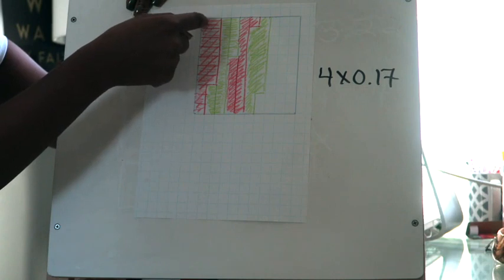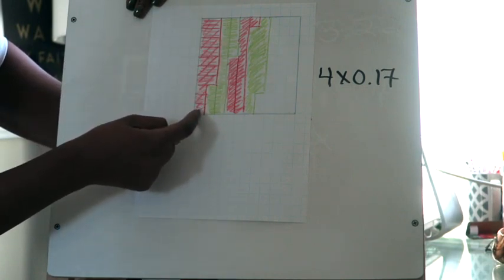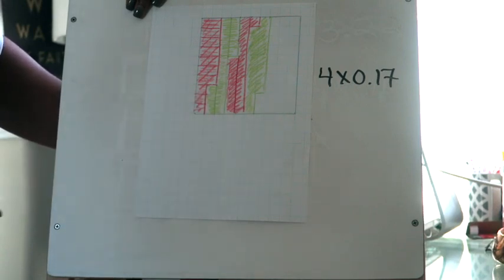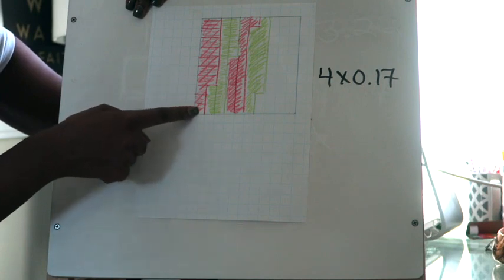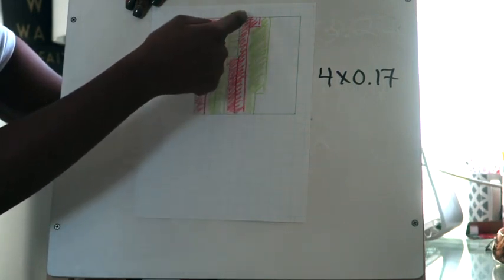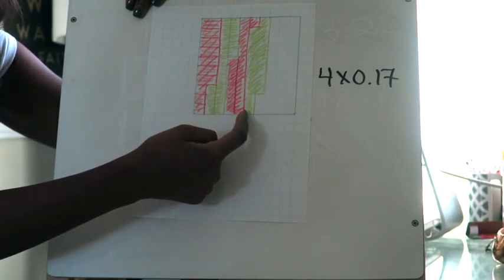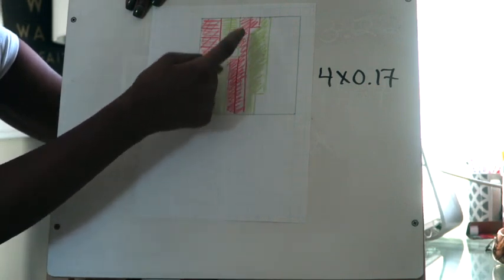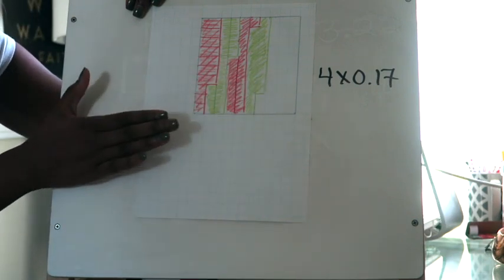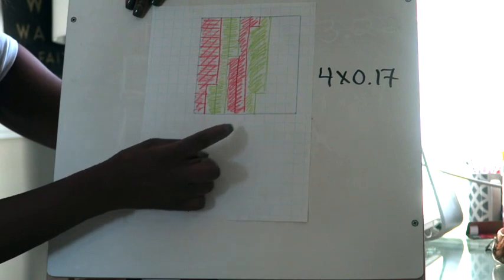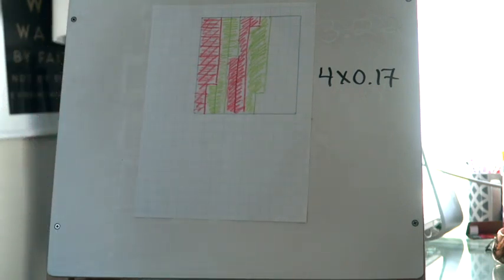You want to remind yourself there are ten hundredths in one tenth. So instead of counting one by one, tell yourself: one full column colored is ten, a second full column is twenty, thirty, forty, fifty, sixty. So I know I have sixty there. The last column is not fully colored, so counting individually: sixty-one, sixty-two, sixty-three, sixty-four, sixty-five, sixty-six, sixty-seven, sixty-eight. This model shows me that four times 17 hundredths is 68 hundredths, or 0.68.